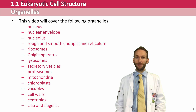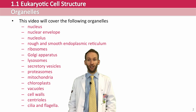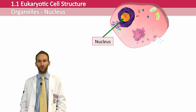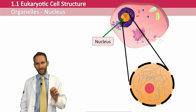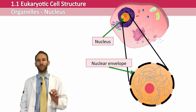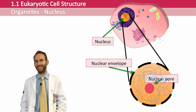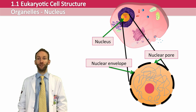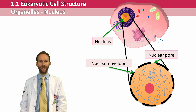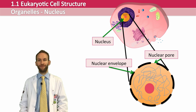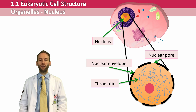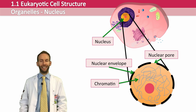The first and probably most important organelle is the nucleus — it's the largest organelle. It's surrounded by a double membrane called the nuclear envelope, which has little pores in it, very important in the process of protein synthesis, which we'll look at later. The nucleus contains all the DNA of the cell, which is normally in the form of chromatin — unraveled and jumbled up. Before the cell divides, the chromatin organizes itself into chromosomes.